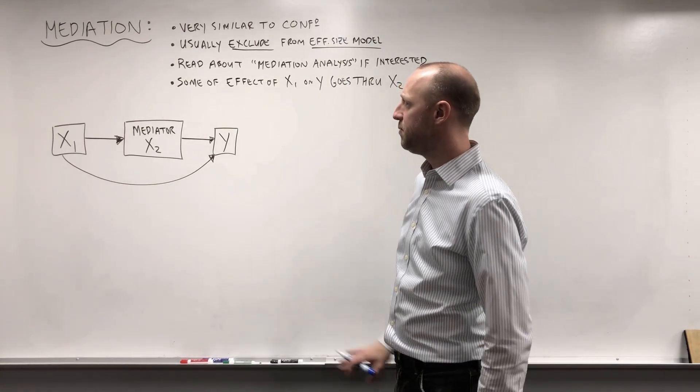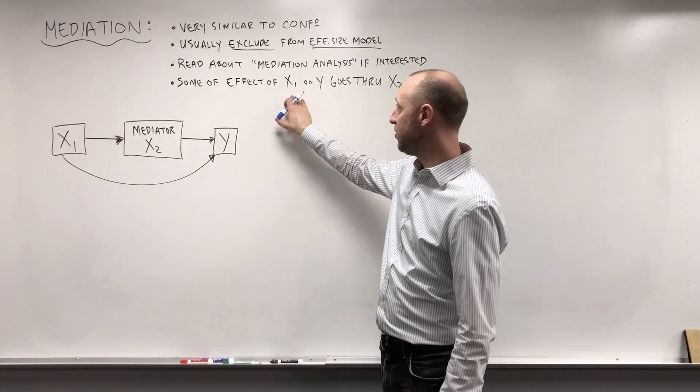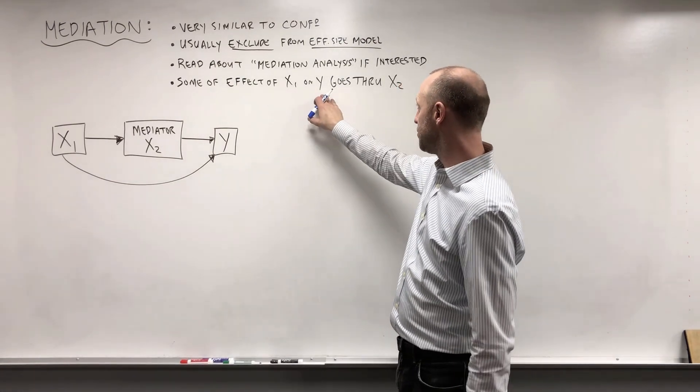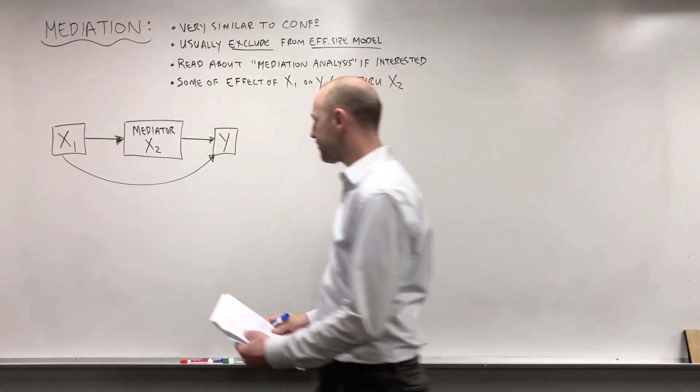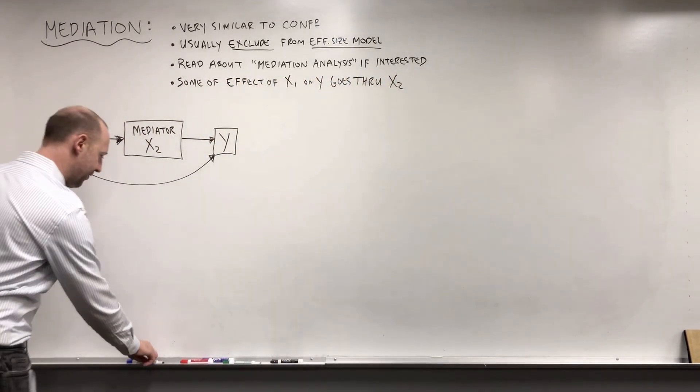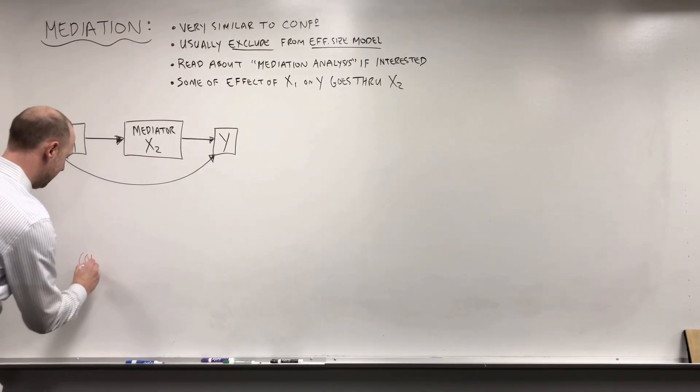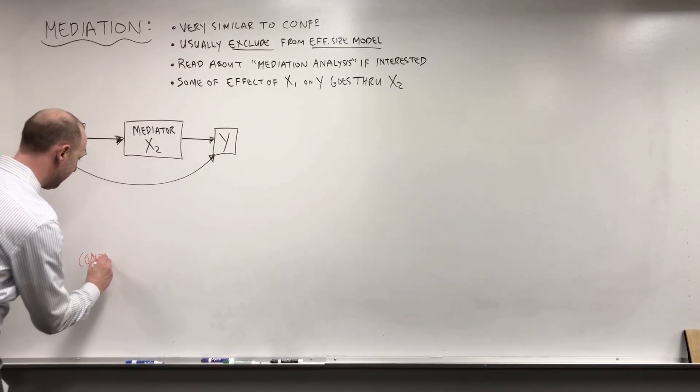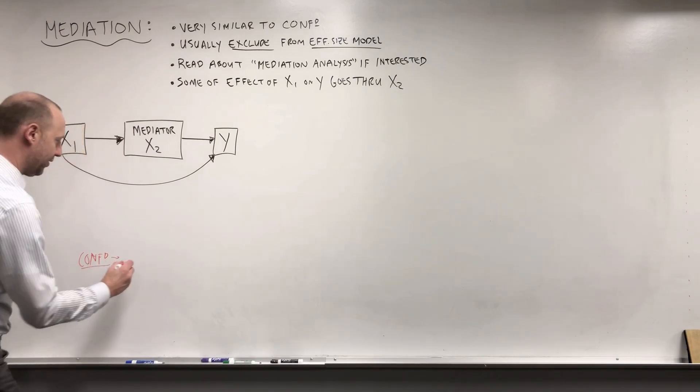Essentially what mediation is, is when some of the effect of the variable of interest x1 goes through the x2 variable. If you remember, just to kind of parallel it, confounding looks like this.